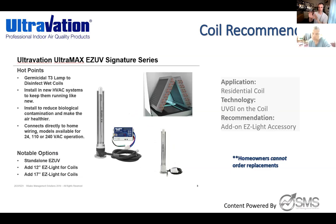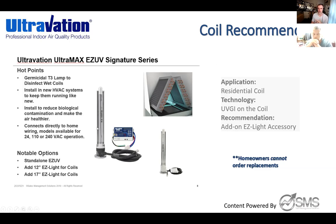The Easy UV Signature Series is our best coil application — I actually have this installed in my house. It's a lifetime warranty product with built-in lamp monitoring, on/off switch, and directional shielding. I have two of these lamps in my Z-coil downstairs. You can add an accessory lamp and power two lamps with one wiring job, getting even more surface area coverage on the coil. You could mount one in the opposite direction to go across the top of an A or Z coil.